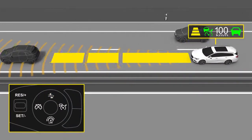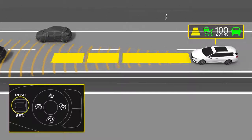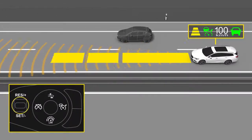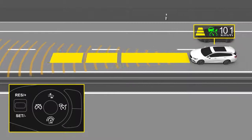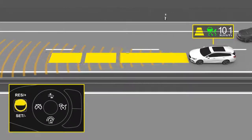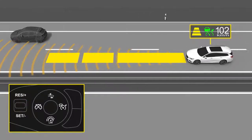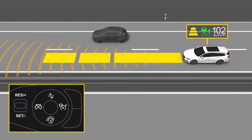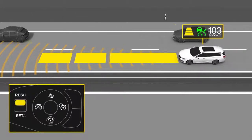The set cruising speed can be adjusted with the thumb wheel on the steering wheel. Move the thumb wheel up repeatedly to increase the speed in small steps. Move and hold it for larger steps.